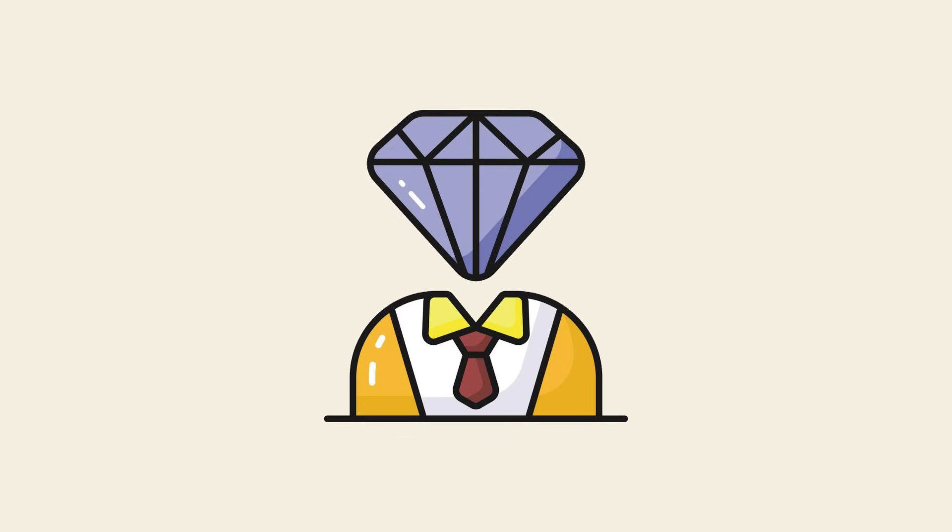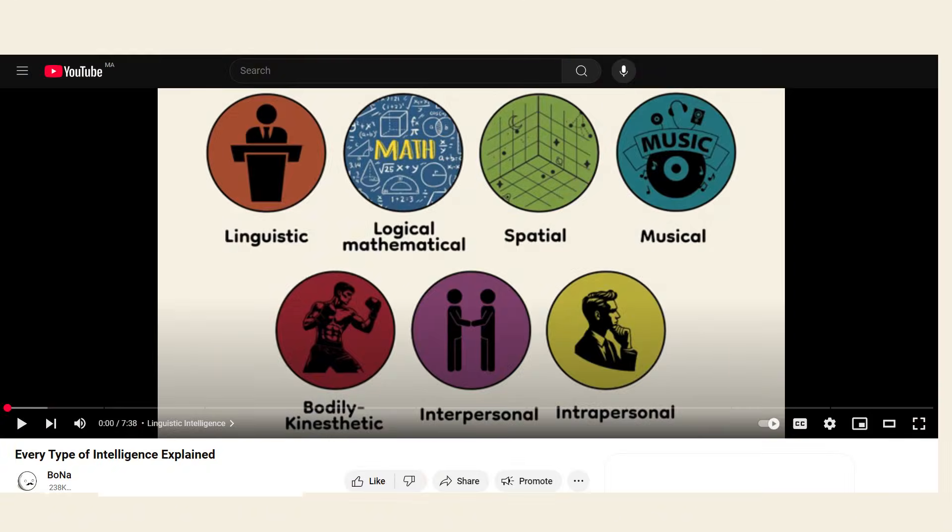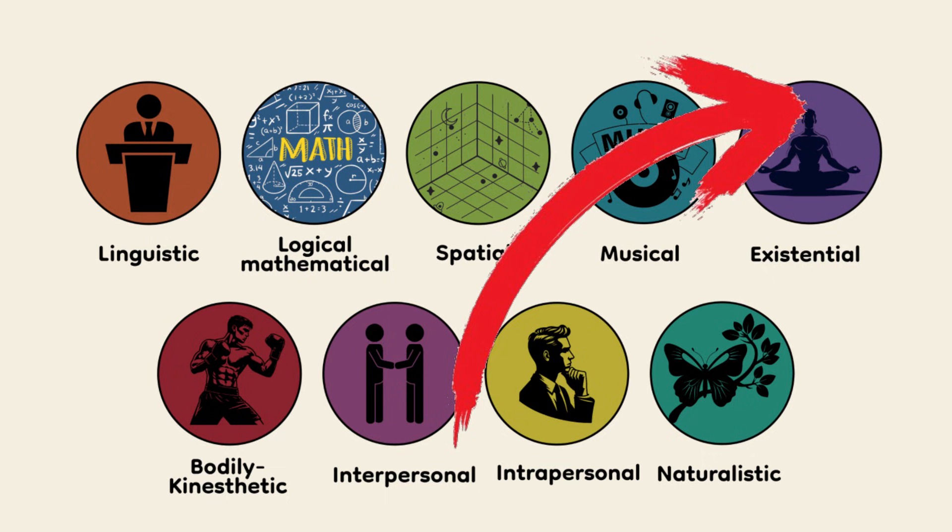Traditional IQ tests don't measure most of them. Meaning, some of the most brilliant minds in the world might not score high on an IQ test, but that doesn't mean they aren't intelligent. I actually made a separate video breaking down all nine types of intelligence in detail. So if you're curious about which type you might have, go check it out. It'll pop up in the top right corner, or you can find it linked in the description below.